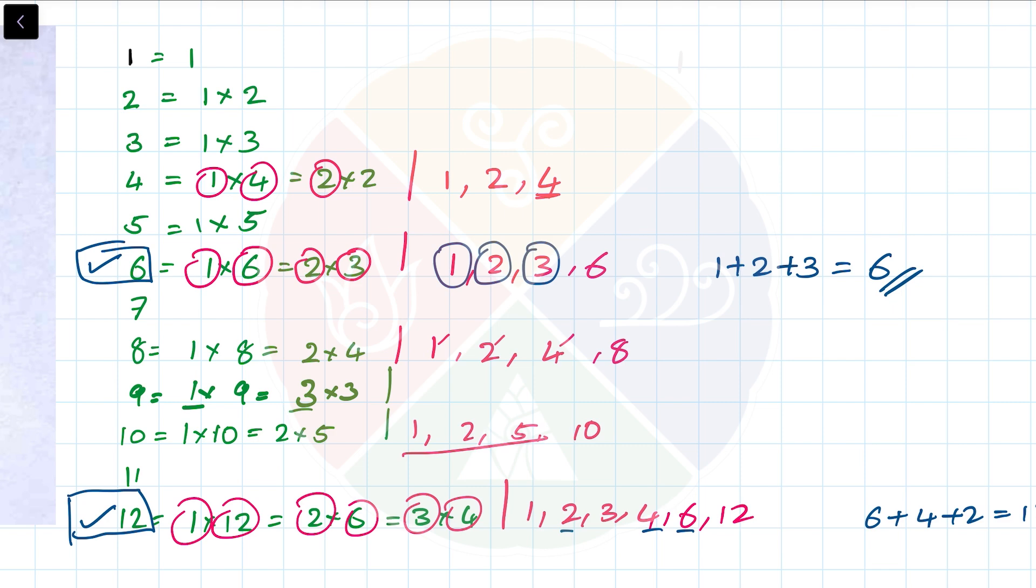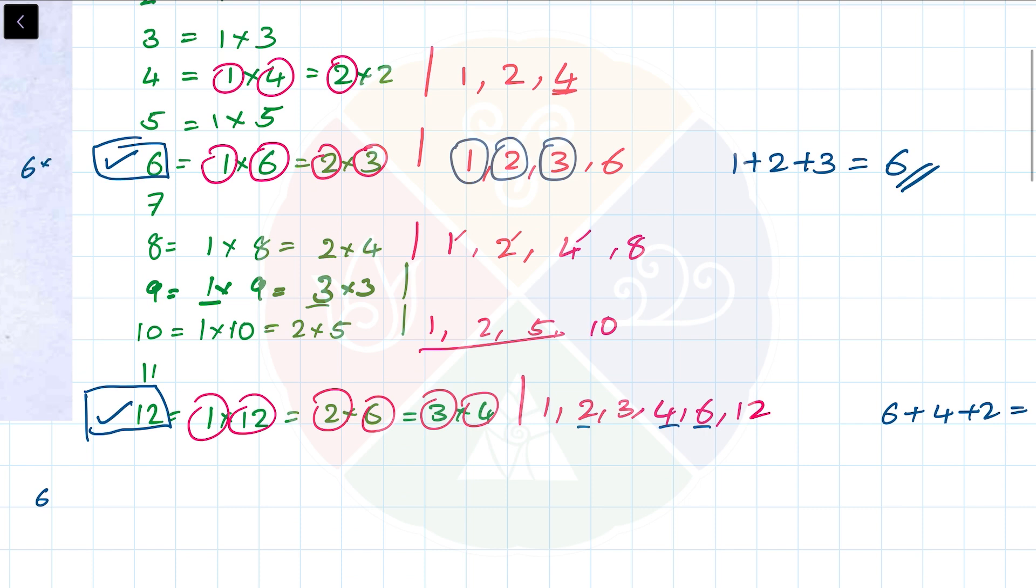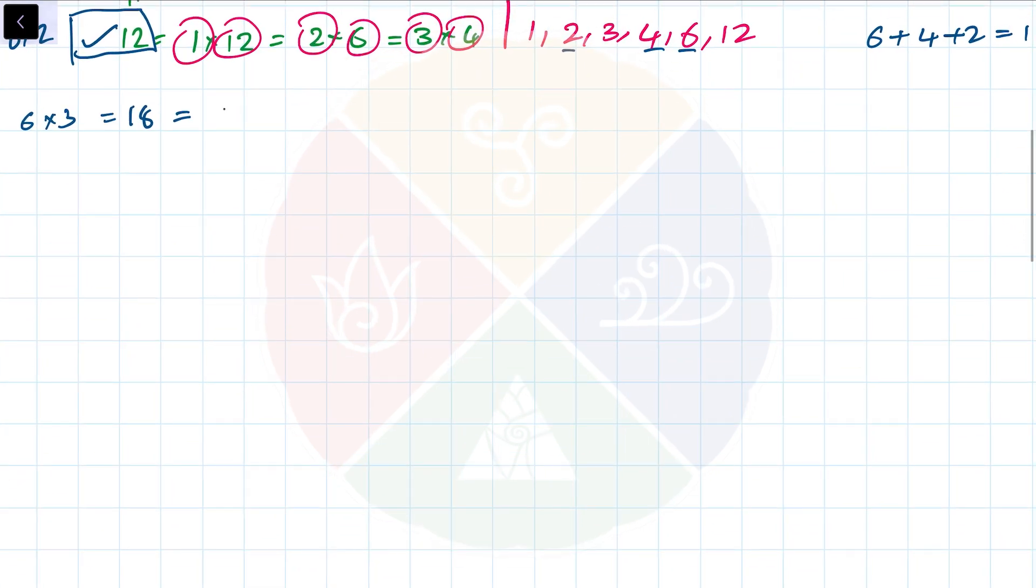Just to test my theory, I'm going to take the next multiple of 6. This was 6 times 1, this was 6 times 2, I'll take 6 times 3 which is 18. Let's write down the factors of 18: 1 times 18, 2 times 9, 3 times 6. So the factors of 18 are 1, 2, 3, 6, 9, 18. Here also I can find these three numbers: 9 plus 6 plus 3 equals 18. So that is the rule - we are looking for the multiples of 6.